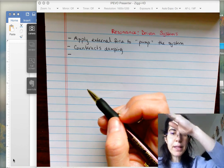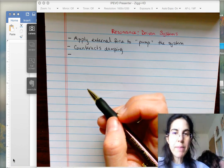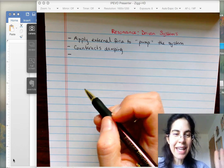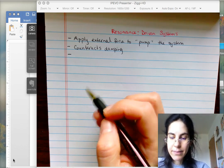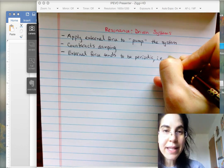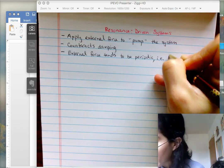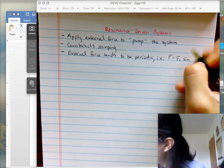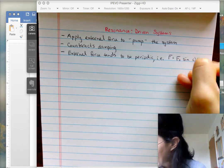The fact that damping means the motion is going to die down means that driving the system has to happen again and again and again and that means the external force would tend to be periodic of a model that looks something like this.